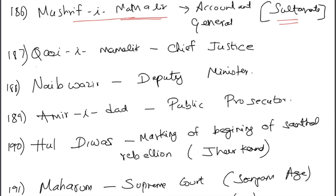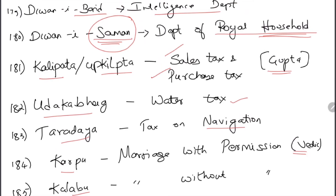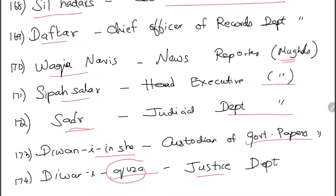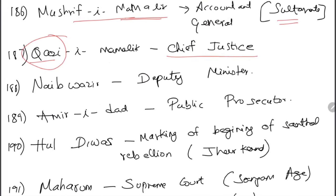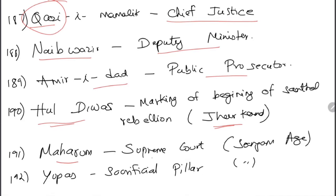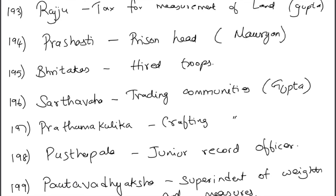Mushrif-i-Mamalik was the accountant general during the Sultanate period. Qazi-i-Mamalik related to justice — 'Qazi' always means justice. Naib-i-Vazir was the deputy minister. Amir-i-Dad was the public prosecutor. Hul Diwas marks the beginning of the Santal Rebellion — it is still celebrated in Jharkhand. Maharam was the supreme court during the Sangam age. Yupas were sacrificial pillars during the Sangam age.